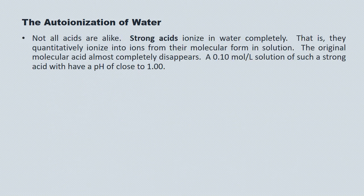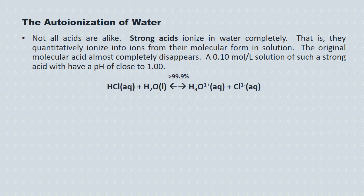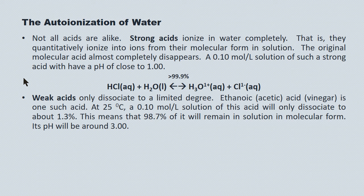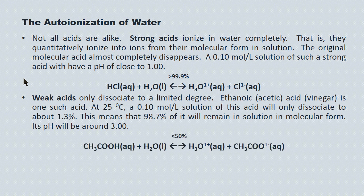Not all acids are alike. Strong acids ionize in water completely — they quantitatively ionize into ions from their molecular form in solution, so the molecular acid almost completely disappears. For example, aqueous hydrogen chloride, also known as hydrochloric acid, converts greater than 99.9% to hydronium ions and chloride ions in water. There is an equilibrium, but it greatly favors products. On the other hand, weak acids only dissociate to a limited degree. Ethanoic acid is one such acid: at SATP, just about 1.3% of it ionizes, meaning 98.7% remains in molecular form.